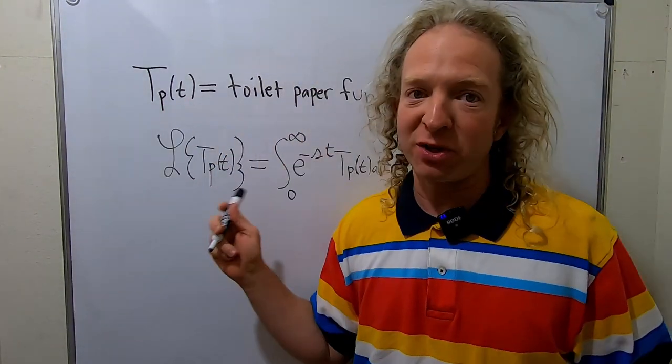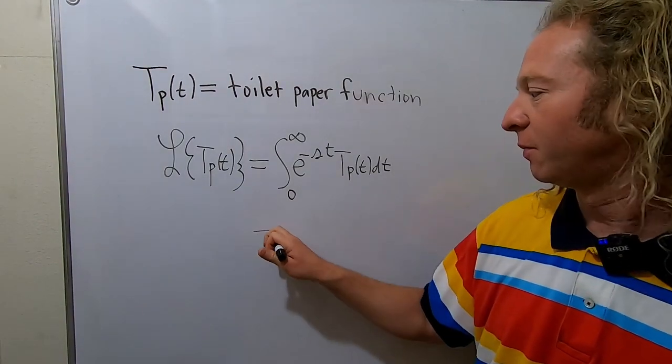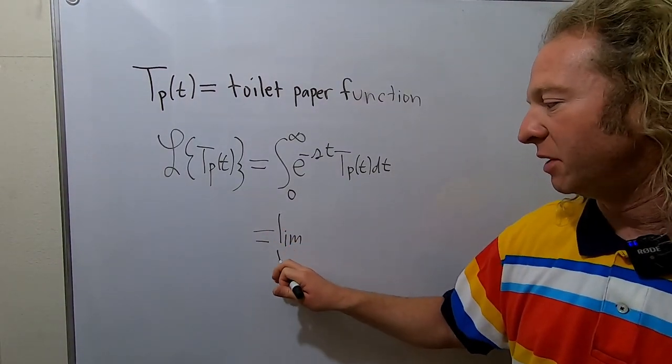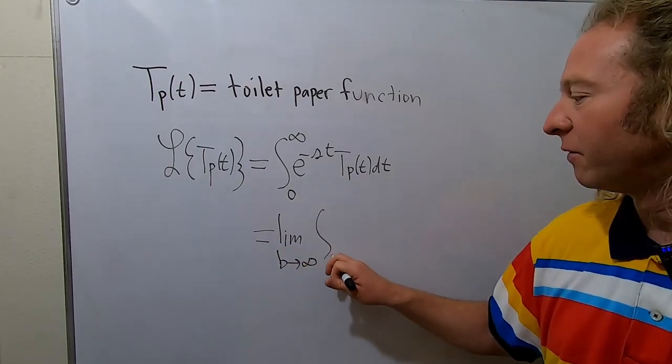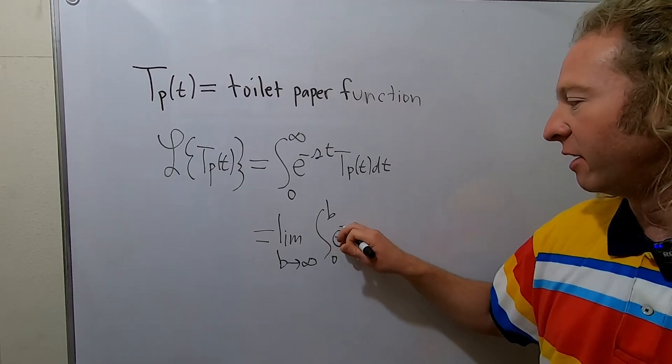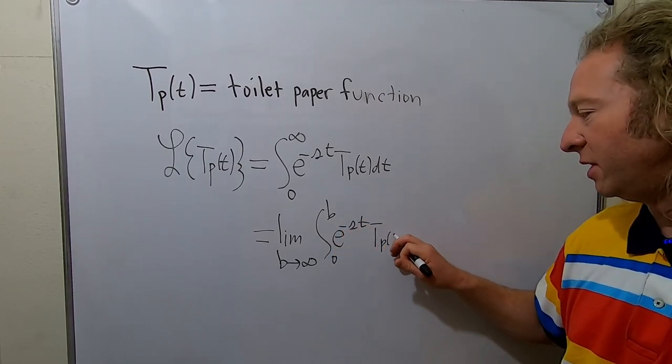And it's of exponential order. So this is equal to the limit as B goes to infinity of the definite integral from zero to B, e to the negative st, Tp of T.